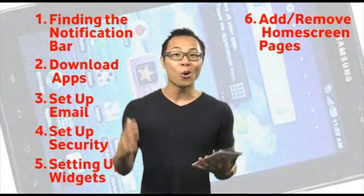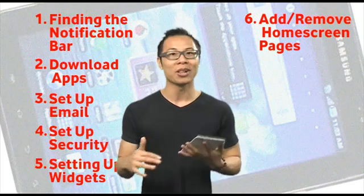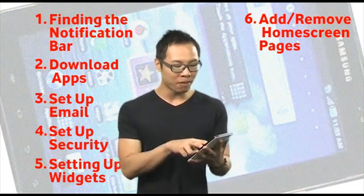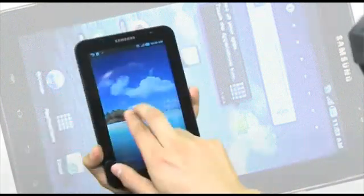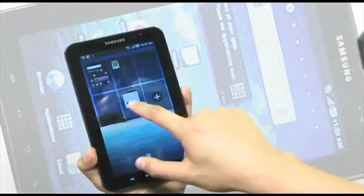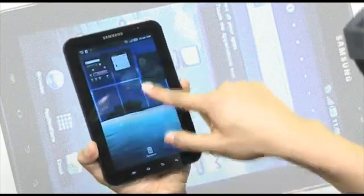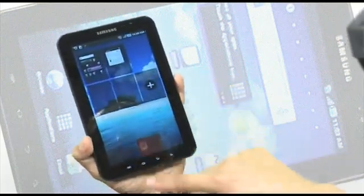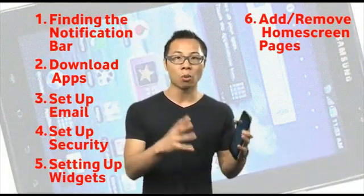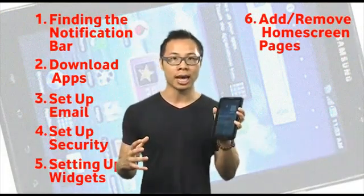Once you've set up all your widgets on your home screen, you'll want to manage the home screen itself. Simply from your home screen, pinch and it will bring up a bunch of panels. You can move them around, remove them, or add more. It's really useful if you want to balance work and play on the Galaxy Tab.